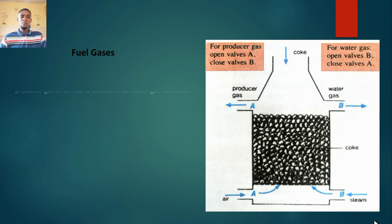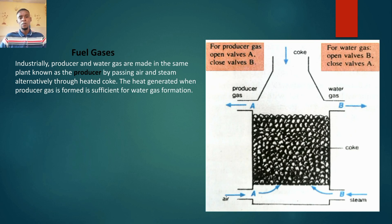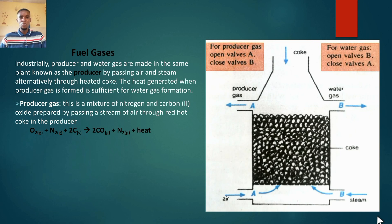Fuel gases are gases that could be used as fuel, obtained from passing either steam or air through very hot coke. Industrially, producer gas and water gas — the two major fuel gases — are made in the same plant known as a producer, by passing air and steam alternatively, not at the same time, through heated coke. The heat generated when producer gas is formed is sufficient for water gas formation.